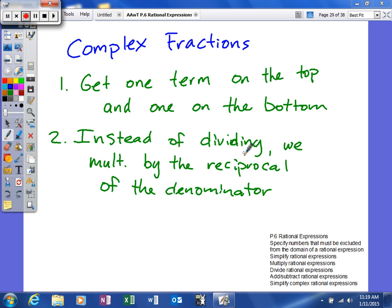First thing we do: get one term on the top, one on the bottom. If you have more than one, you need to add them together. And then the second thing we need to do, instead of trying to divide, we're going to multiply by the reciprocal of the denominator.